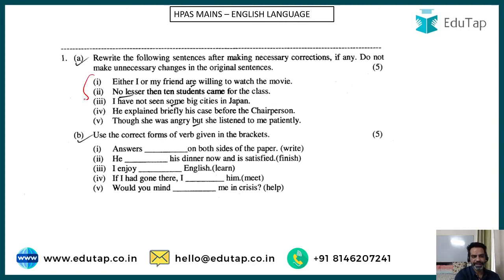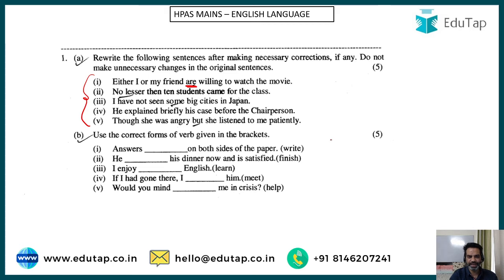We'll be discussing the first type of questions, that is error detection. You are given a sentence and you have to find the error in it. For example, from a previous paper: 'Either I or my friend are willing to watch the movie' — the error was 'are', it should be 'is'. 'No lesser than 10 students came for the class' — it should be 'no fewer than' because students are countable. 'I haven't seen some big cities' — it should be 'any big cities'; this is based on determinants. 'He explained briefly his case before the chairperson' — it should be 'He briefly explained his case'; briefly should be before the verb — a rule of adverb. 'Though she was angry, but she listened to me patiently' — 'but' should be replaced by 'yet'; this is a question of conjunction.